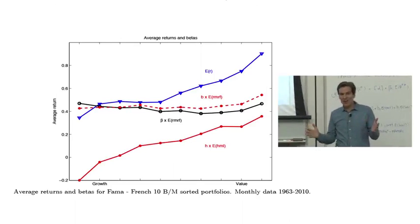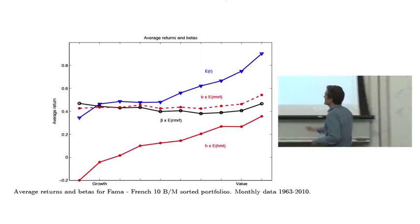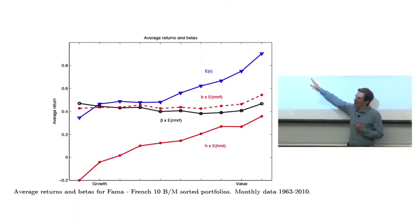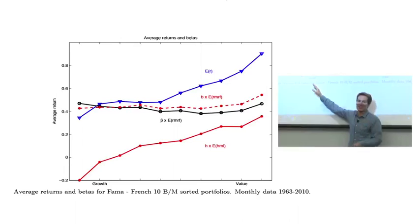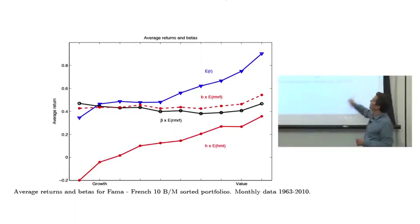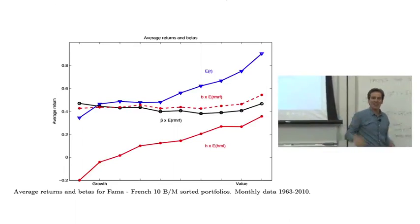That's called the good stock versus good company fallacy. Great companies with lots of profits, the stock market knows about it already, and those prices are already high. Too late for you. So that the return to stockholders is actually better taking on the value stocks.